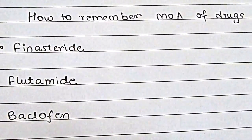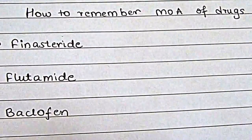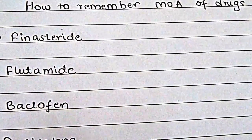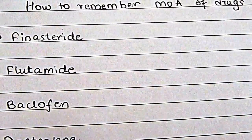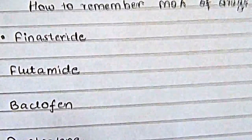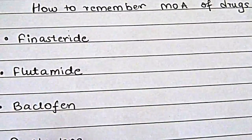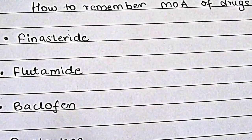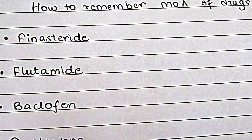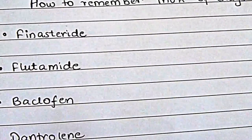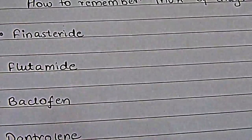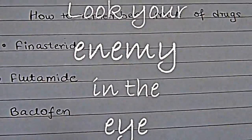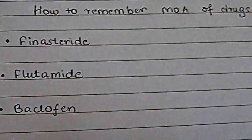I'm going to share a pharmacology tip — how I remember certain drug names and their mechanism of action. If there is a drug and you keep forgetting something about it, even after revising over and over again, you have to know your weakness to make it a strength. It's like looking your enemy in the eye.